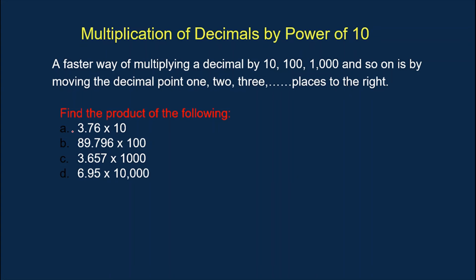Let's have some examples. We have 3.76 multiplied by 10. Just look at how many zeros 10 has — we have one zero. So all we have to do is move our decimal point one place to the right. The final answer is 37.6. Why? Because I moved one decimal place to the right, since we multiplied by 10 and 10 has only one zero.